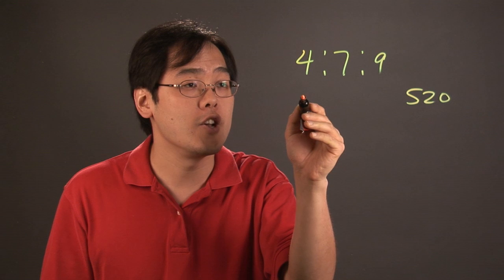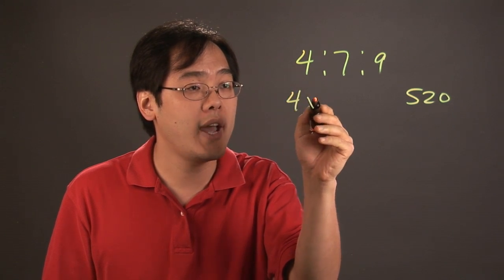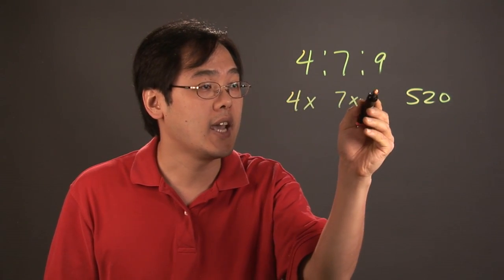What the 4 to 7 to 9 ratio means is that you can set it up as 4x, 7x, and 9x.